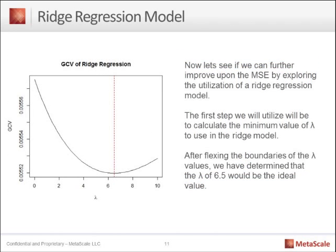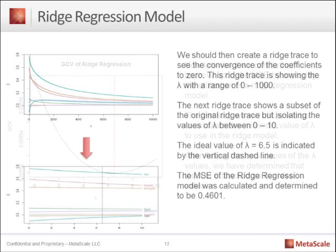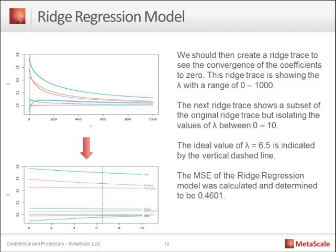Now we're going to dive into ridge regression, lasso, and elastic nets. The first thing we have to do is calibrate by finding a tuning parameter — we're looking for the lambda with the smallest value, which is indicated here as 6.5. We then create special charts called a ridge trace, and in this ridge trace it identifies what these parameter values are. We can then create predictions from it and calculate the mean squared error using ridge regression.